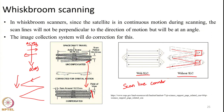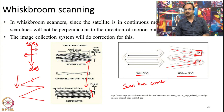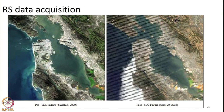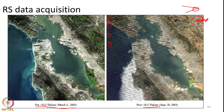In Landsat 7, launched in 1999, the scan line corrector failed in 2003. As a result, NASA and USGS were unable to correct the image for scan line geometry. Before the failure, all images were perfectly aligned without data gaps. After the failure, there is data overlap in some areas but gaps in other parts of the image.